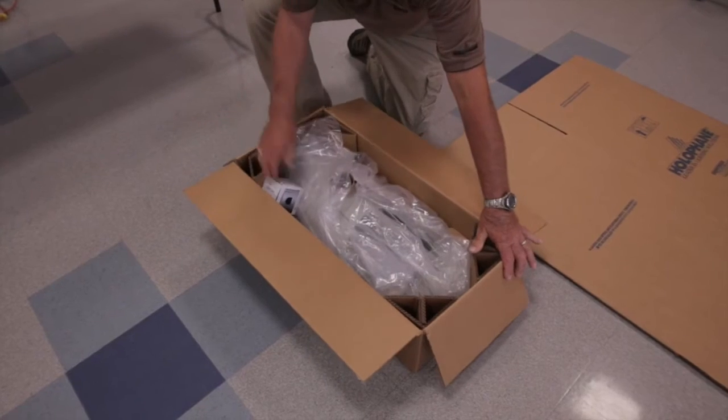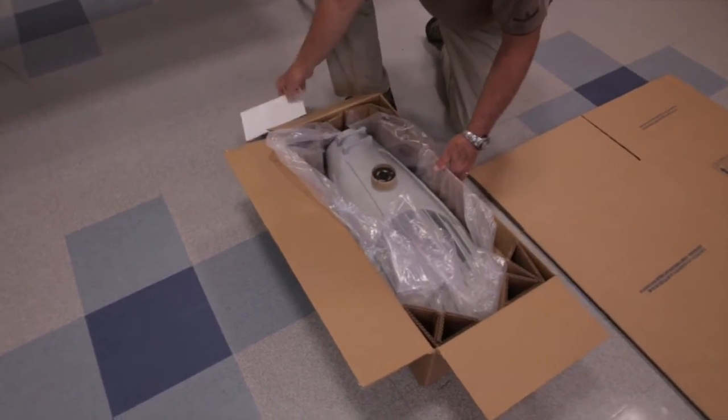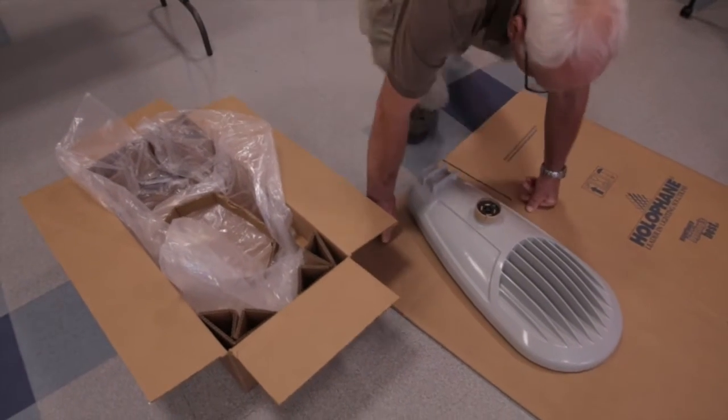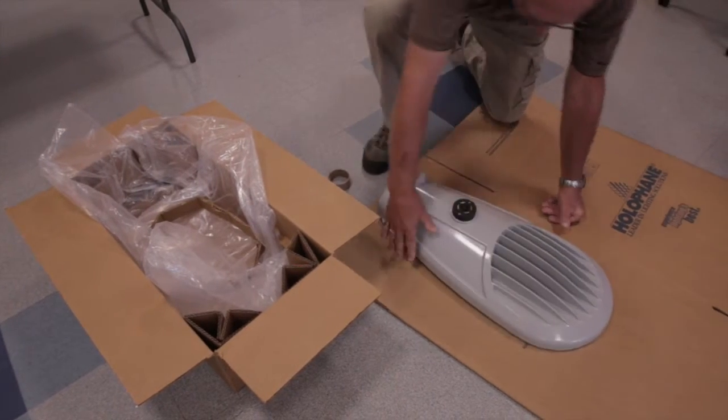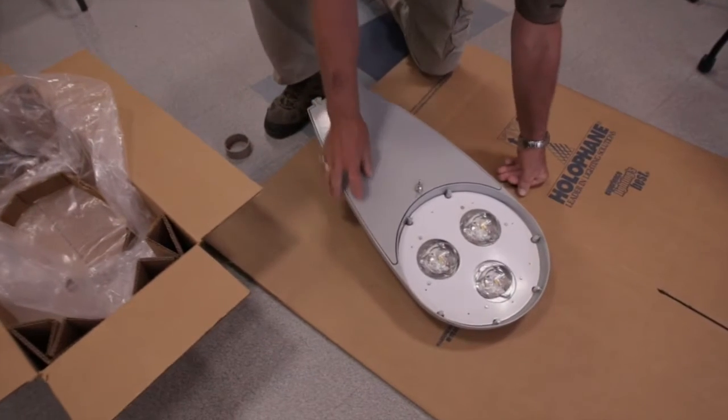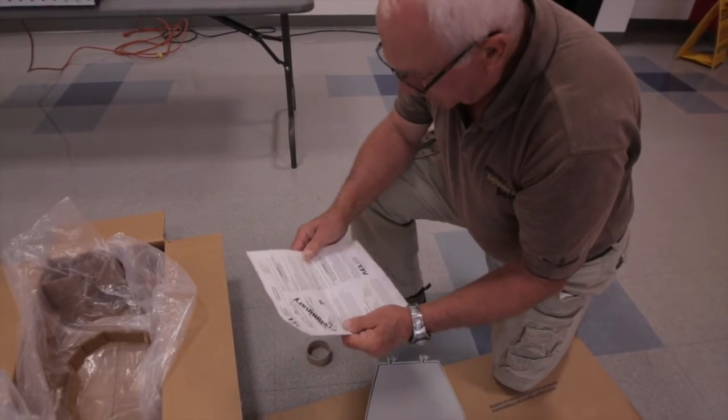Start by unboxing your new Autobahn ATBM. Lay the luminaire on a cardboard surface and remove the corrugated sleeve that protects the photo control receptacle. Visually inspect the product to ensure there is no damage and review the instruction manual for proper installation.